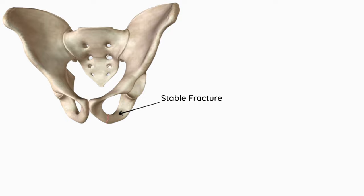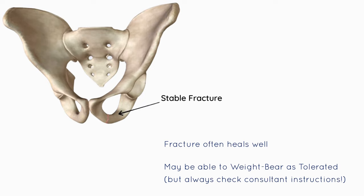A pubic rami fracture can be broken down further into a stable fracture or an unstable fracture. A stable pubic rami fracture may look like this, where there is a clear fracture of the bone but no displacement. These fractures often heal nicely, and you may find that the weight-bearing status of the patient is along the lines of weight-bearing as tolerated, where they are allowed to mobilize but within the levels of comfort and tolerance.